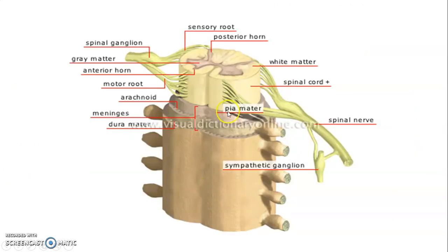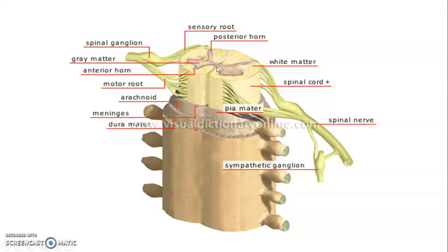The cross-section of the spinal cord: anteriorly and posteriorly you need to appreciate a fissure and a sulcus. A fissure is a narrow invagination. Posteriorly we have a dorsal median sulcus, and anteriorly is a ventral median fissure. The fissure is wider than a sulcus.